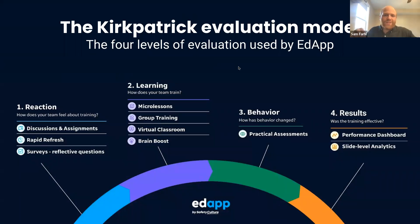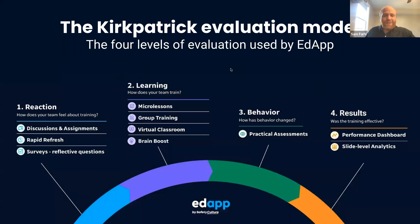For Reaction: discussions and assignments get conversations started with employees about what they want to learn. Rapid Refresh lets you put out a test or quiz with 20 or more questions all at once — you load it up and everyone gets a quiz, and you can see at a question level where the knowledge gaps are. Surveys, reflective questions, and micro lessons help here too. That pre-work is really important for blended learning.